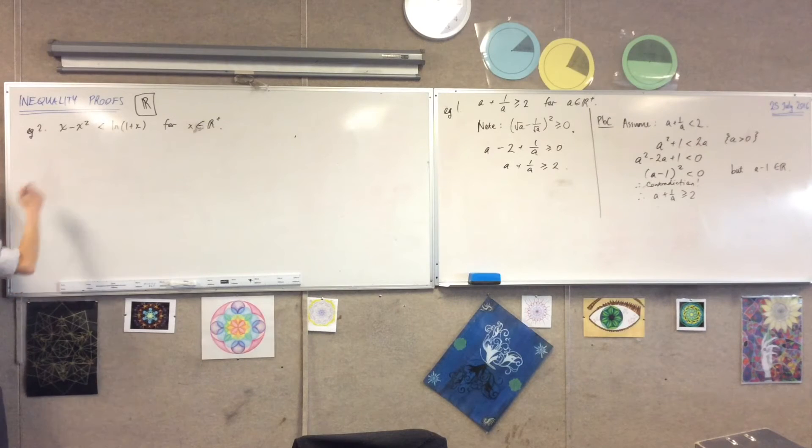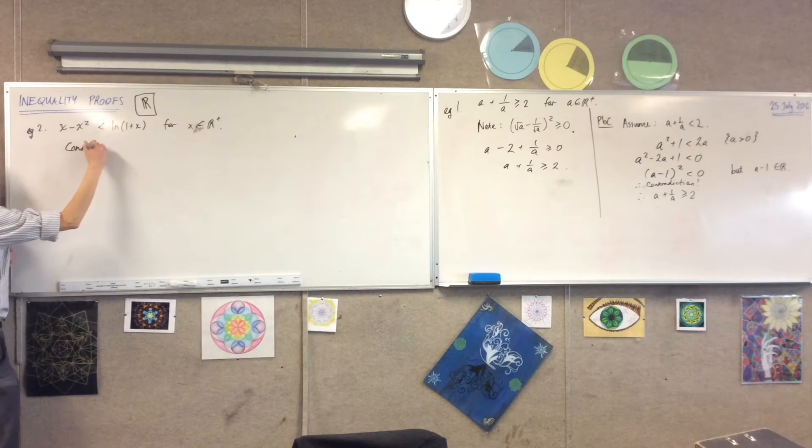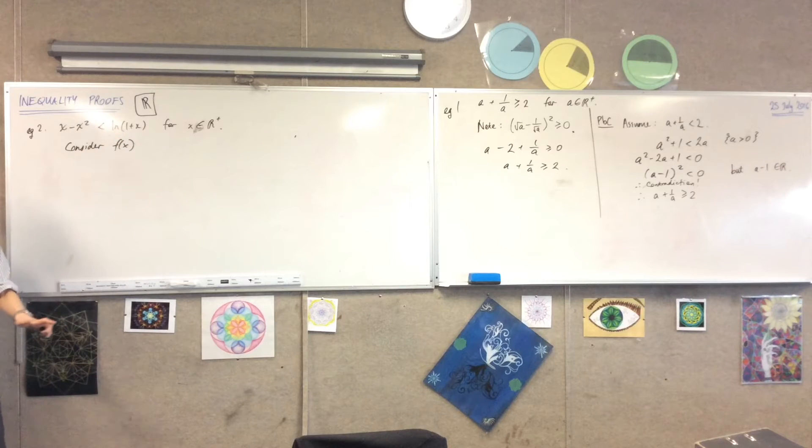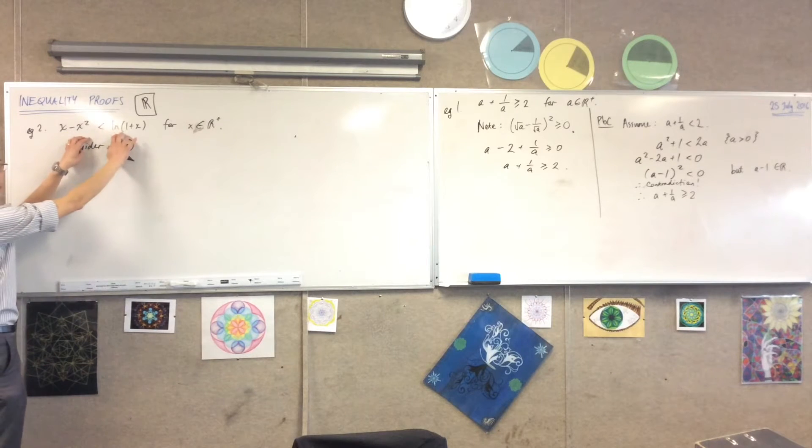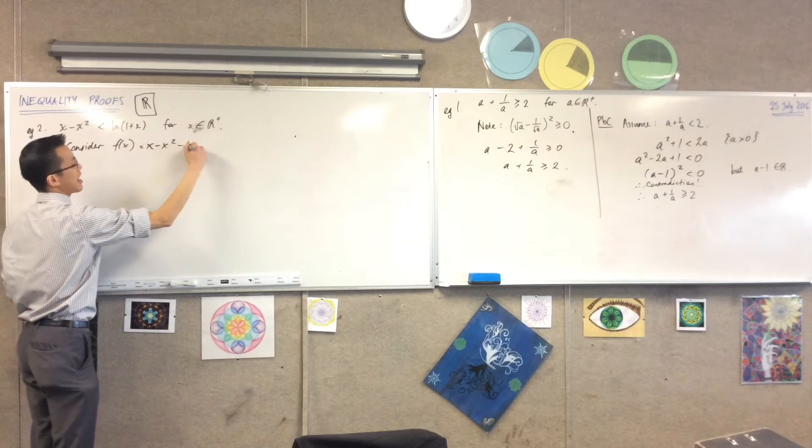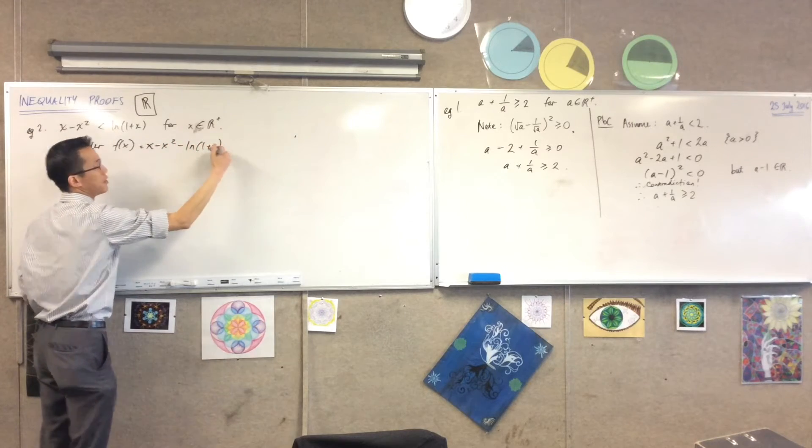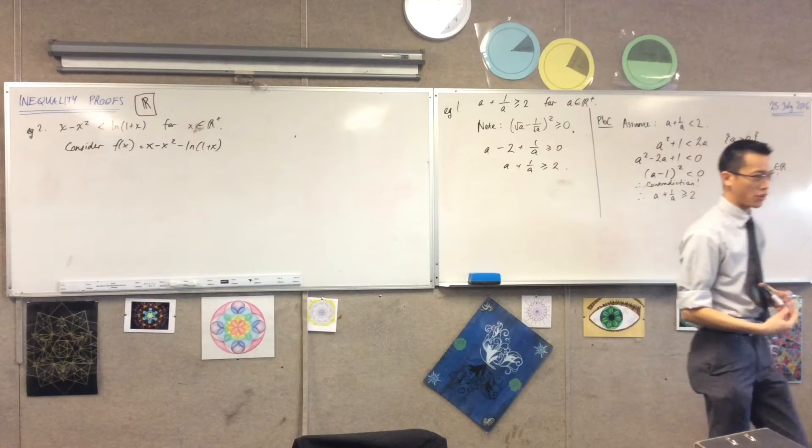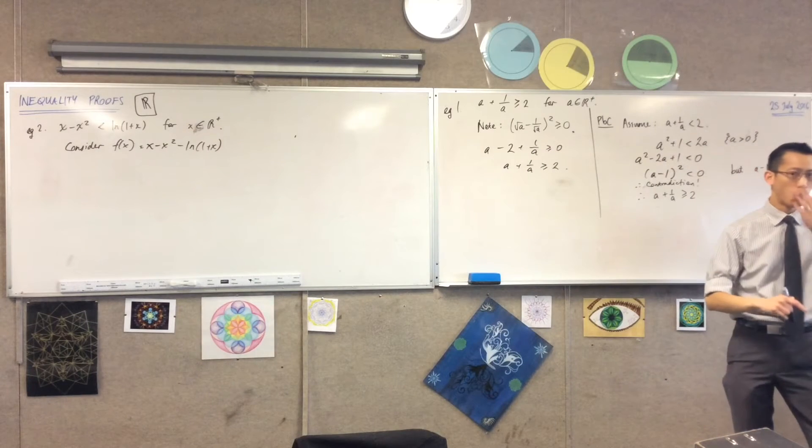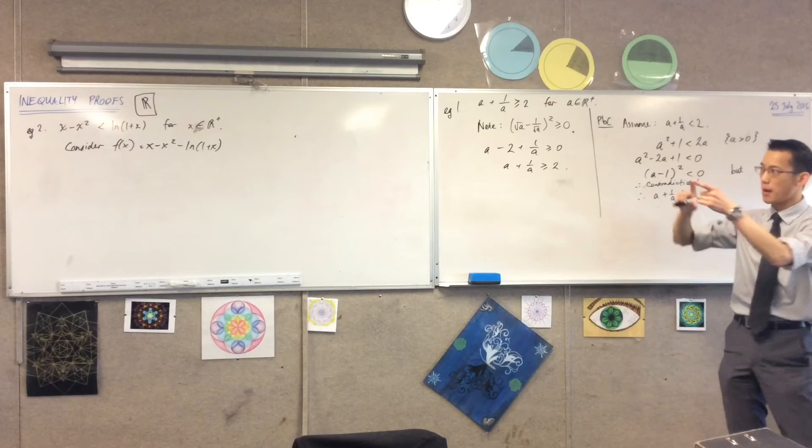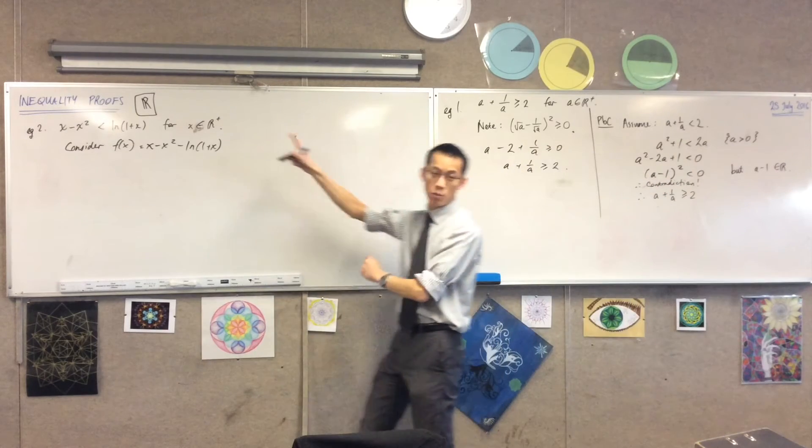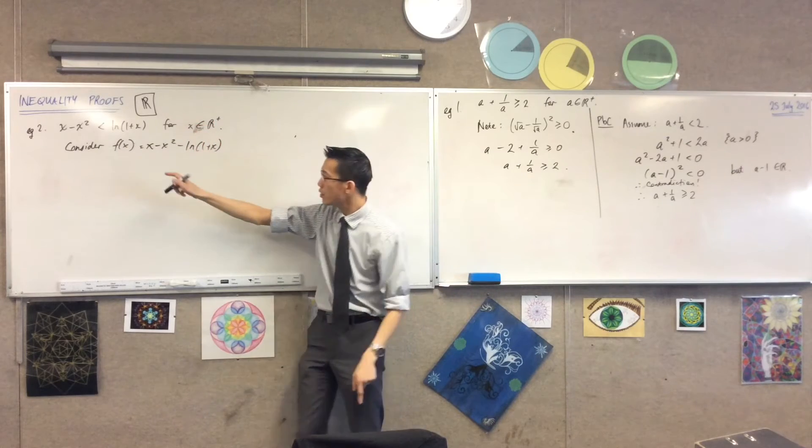So what I'm going to introduce is, consider a new function. And the function I'm worrying about is just what happens when you combine these two together: x take away x squared take away this guy. Now pause for a moment before you embark on actually doing any calculus. Where are we headed if this is my function? What do I want to be true about the function if the original inequality is true?